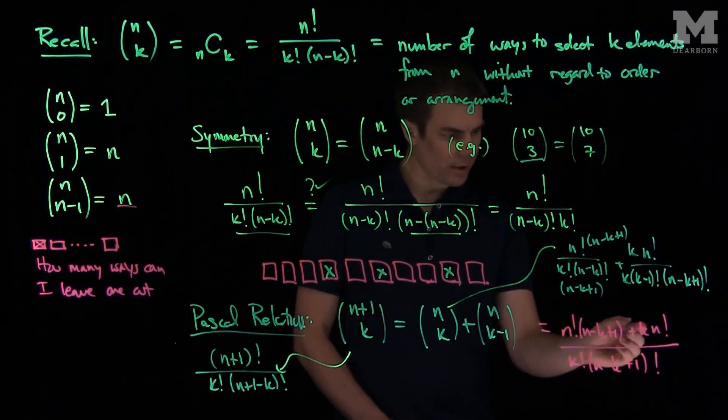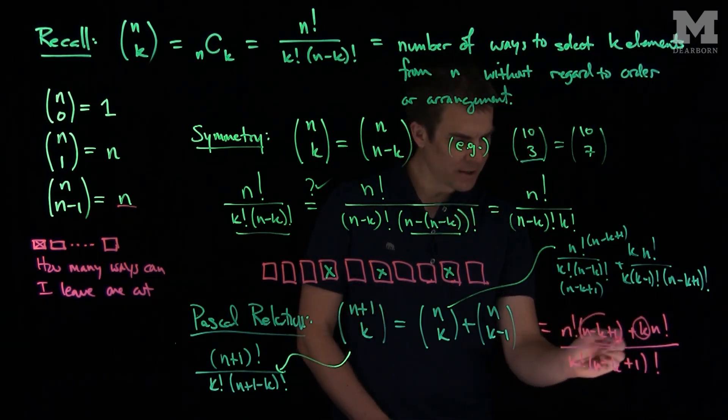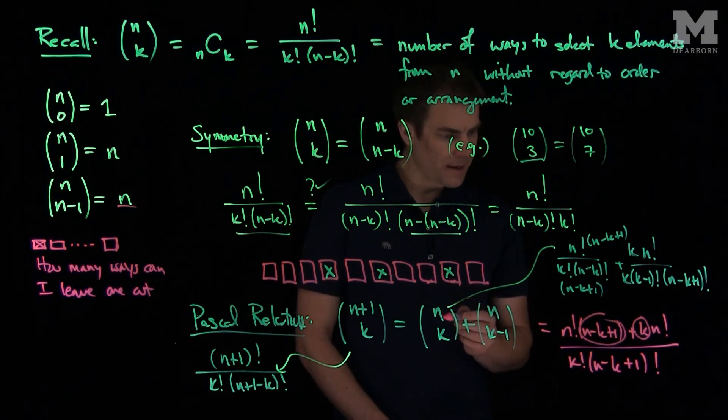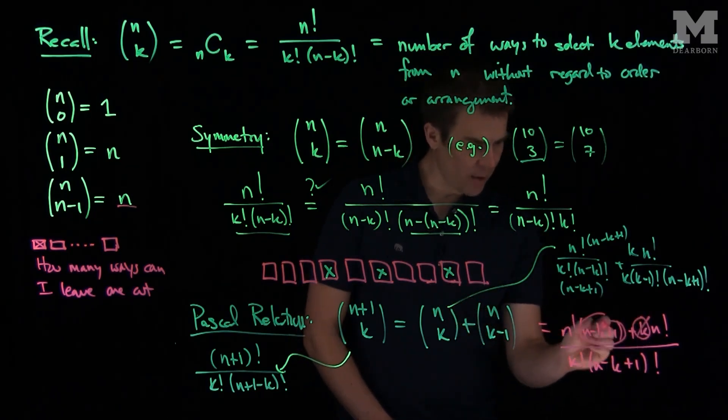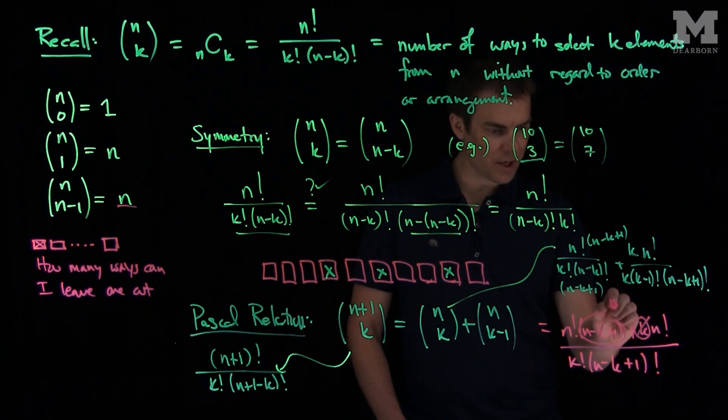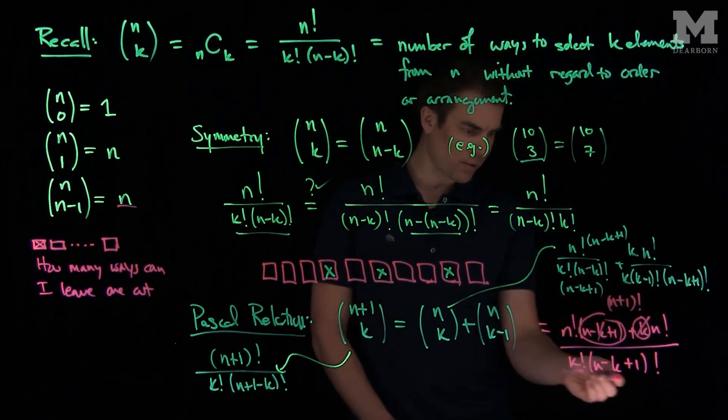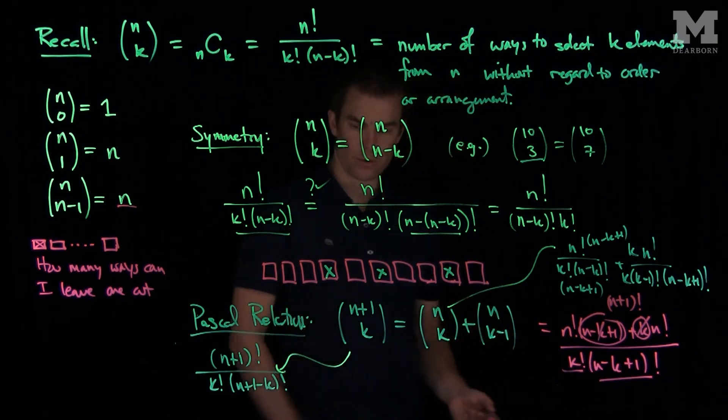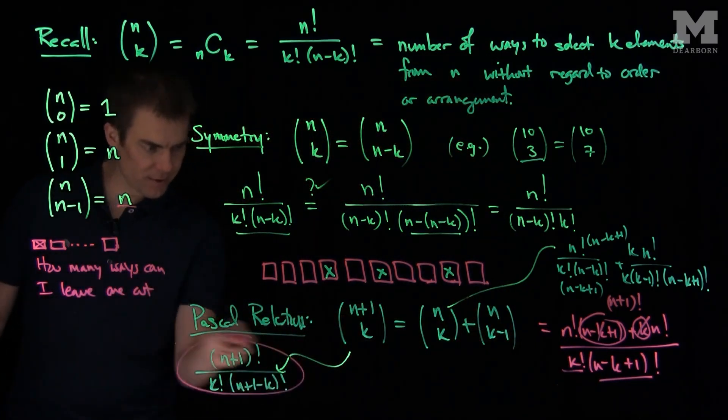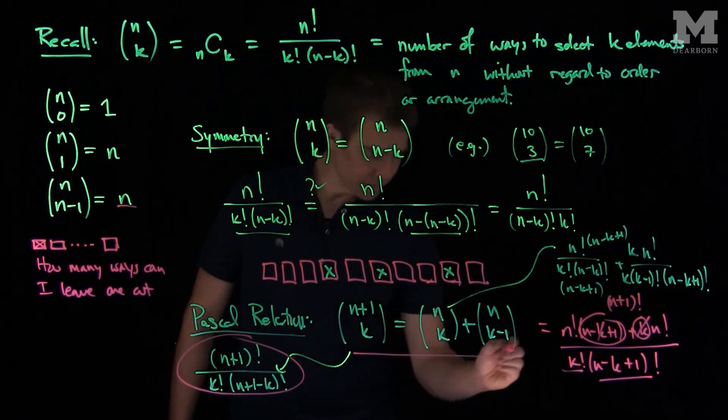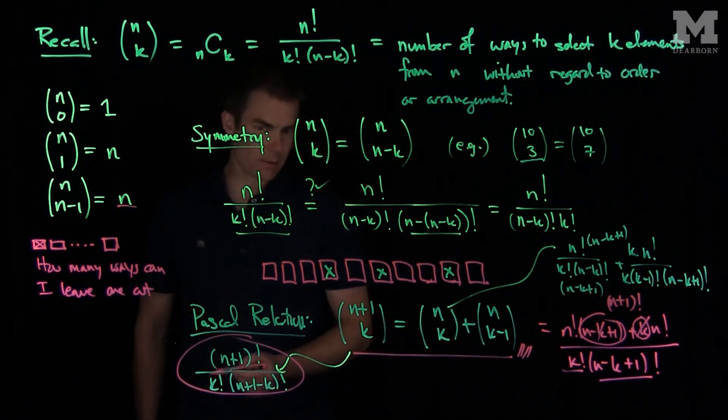There's a common factor of n factorial here, so if I have k plus (n-k+1), those k's will cancel out, and I'll just see that the top is exactly equal to (n+1) factorial. So it's (n+1) factorial over k factorial times (n-k+1) factorial, and that's exactly equal to this expression, so we've just verified this Pascal relation.